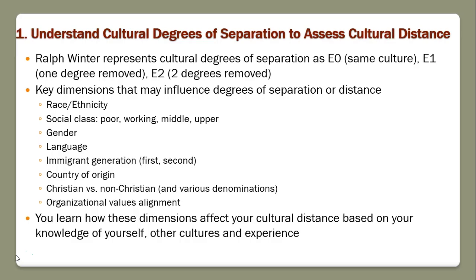Number one is it's really important to understand the cultural degrees of separation, to be able to assess cultural distance. One of the optional readings in this course was Ralph Winter, where he represented cultural degrees of separation in evangelism. E0 was the same culture, E1 was one degree removed, E2 was two degrees removed. You don't really need to read that paper, although it's very helpful, but what's important is to recognize not all cultural distance is the same.